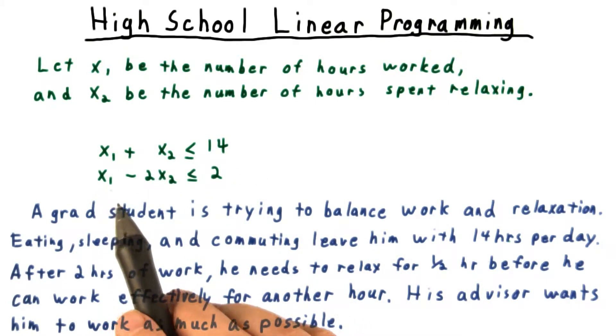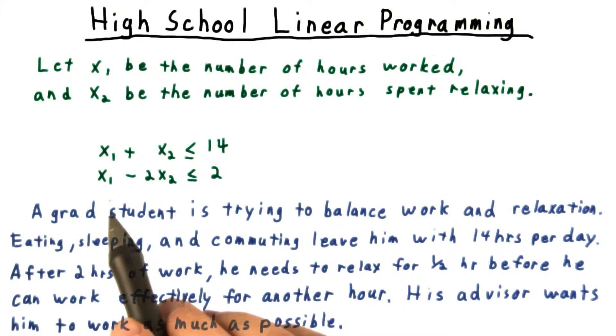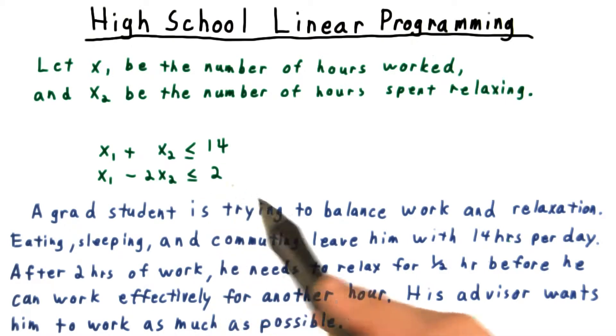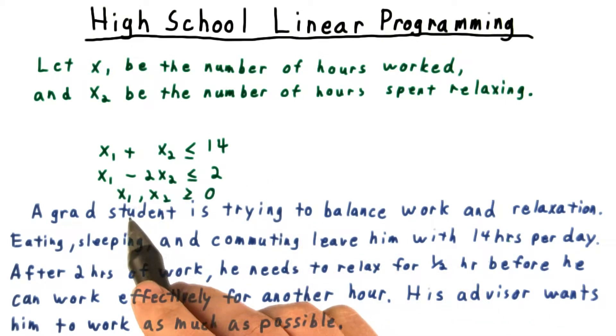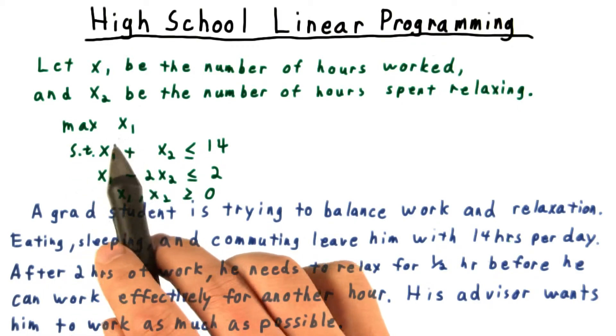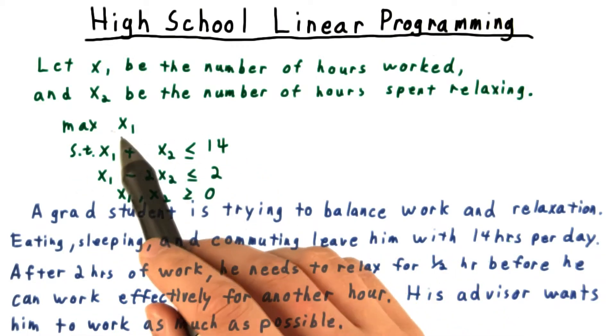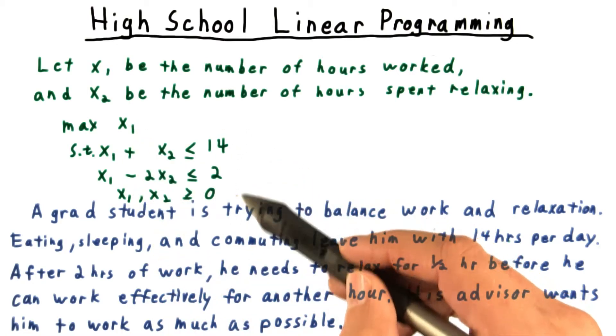And we express the fact that he feels a need for half as much relaxation as work after two hours with this constraint here. Of course, he can't spend negative time on either of these activities, so we need to add that constraint as well. The overall goal is to maximize time work, so we make that our objective function and we want to maximize that subject to these constraints.